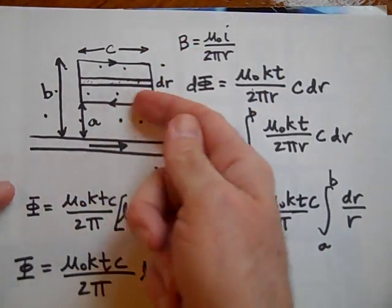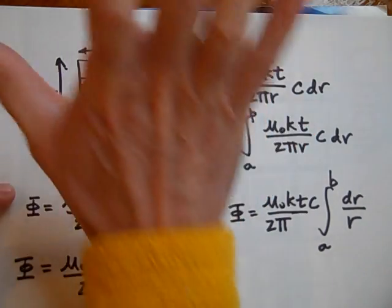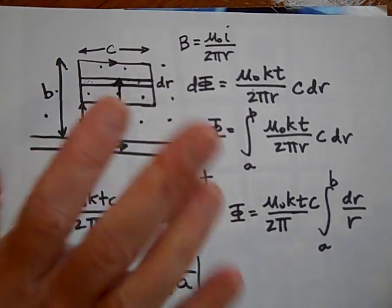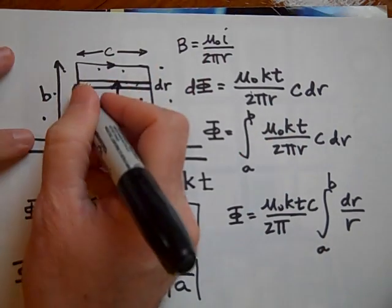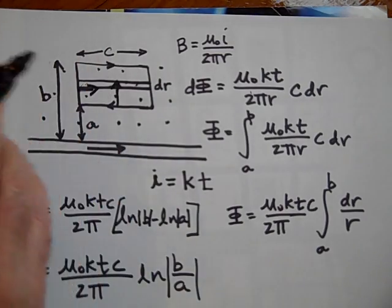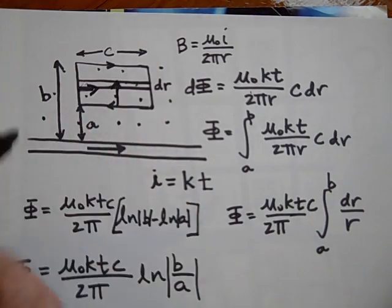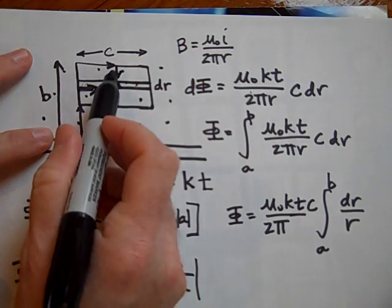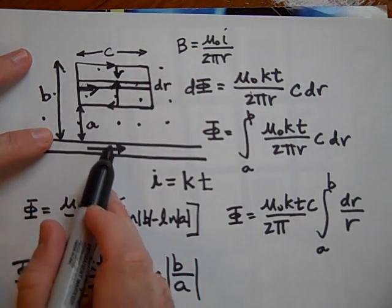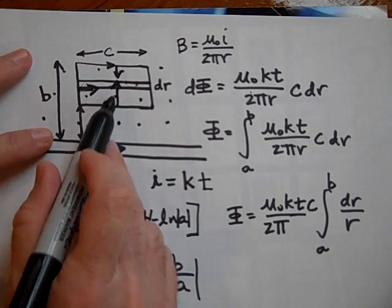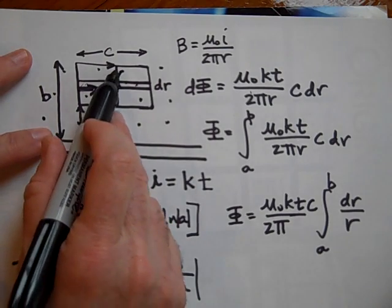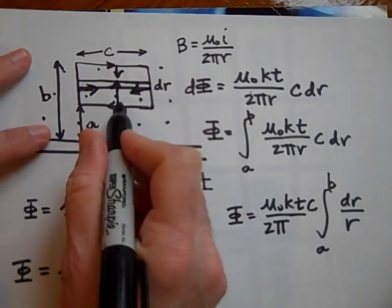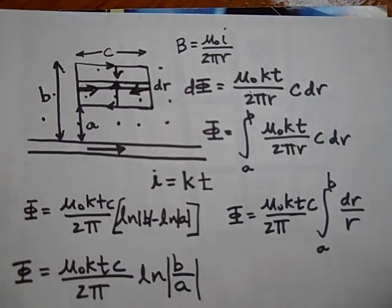With dots coming out and the current going this way, that side is going to be pushed up. This side will be pushed down, but not as much because it's in a weaker field — the field is stronger closer to the wire. The smaller arrow and larger arrow partially cancel, and the net force is upward.